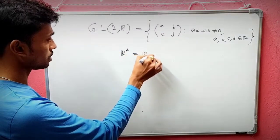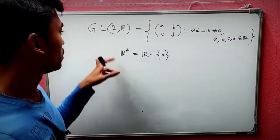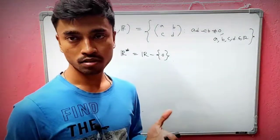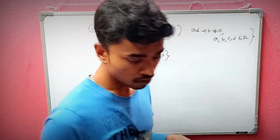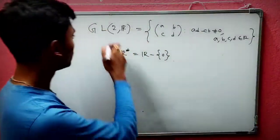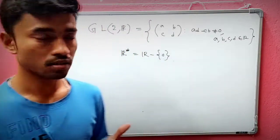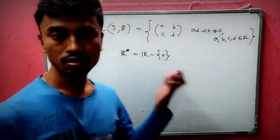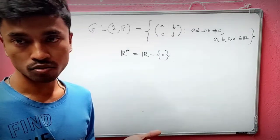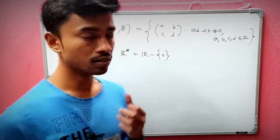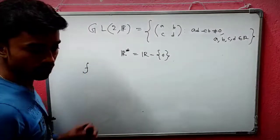R* means R minus {0}, that is, all non-zero real numbers. We define a group homomorphism from GL(2,R) to R*. GL(2,R) is a group with respect to multiplication, and R* is also a group with respect to multiplication — since these are non-zero real numbers, there is no problem multiplying elements.